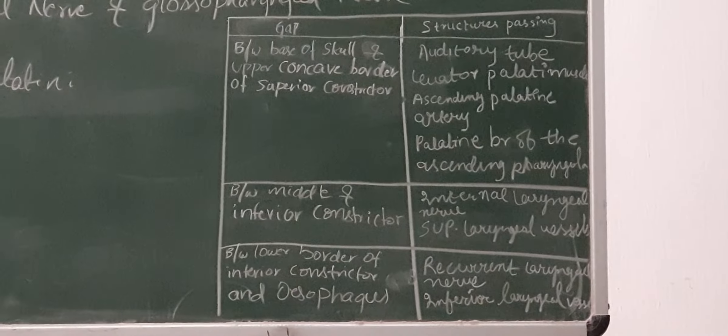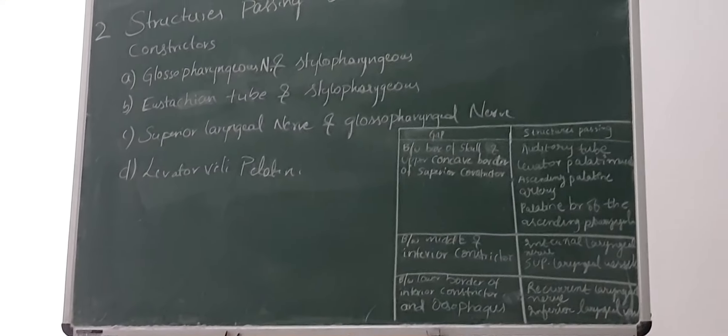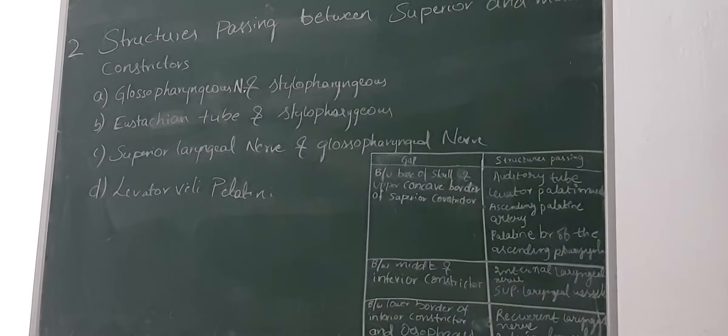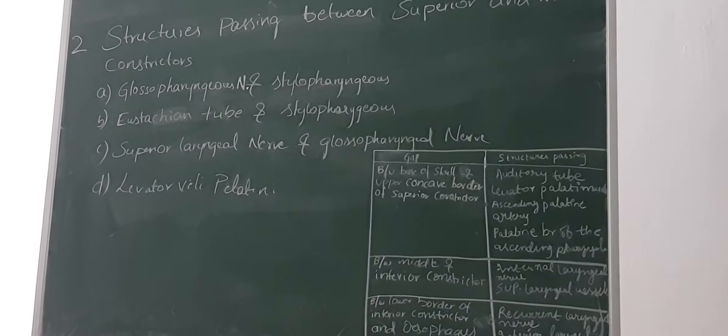So as the question says here, gap between the superior and middle constrictors, it is glossopharyngeal nerve and stylopharyngeus muscle.